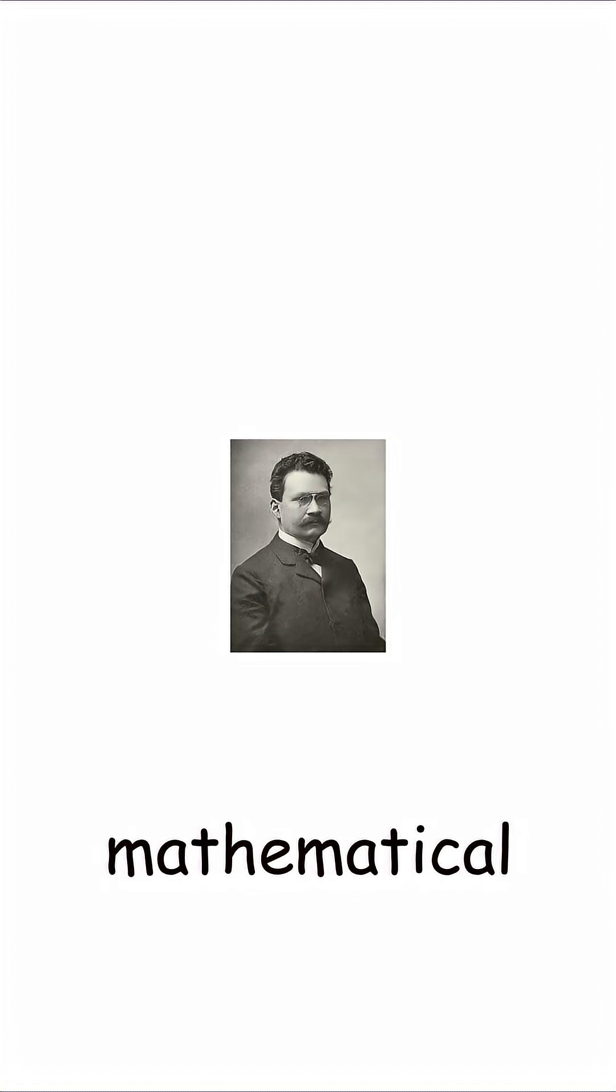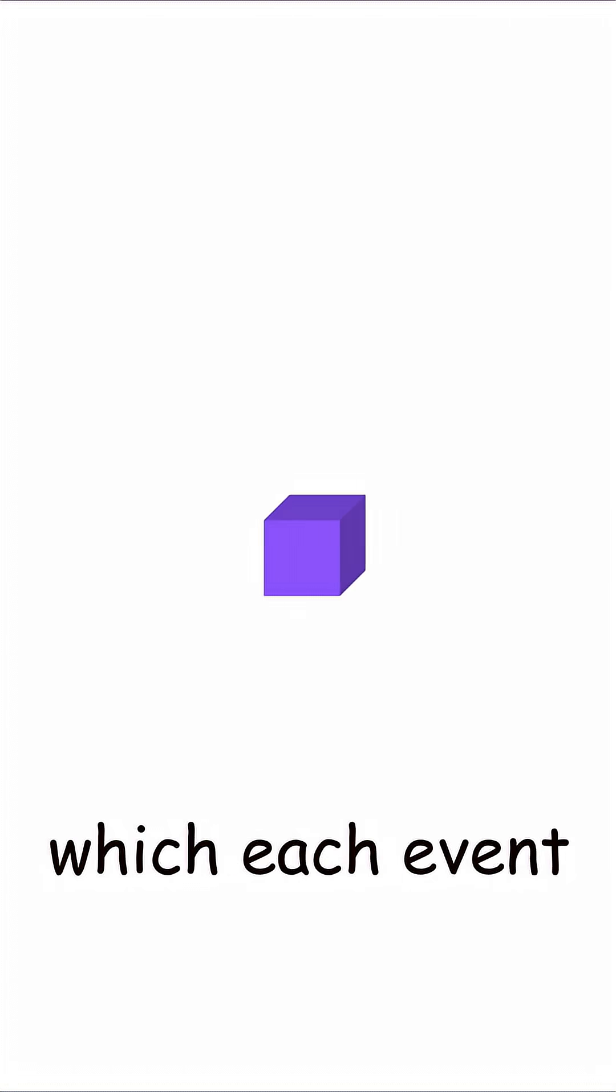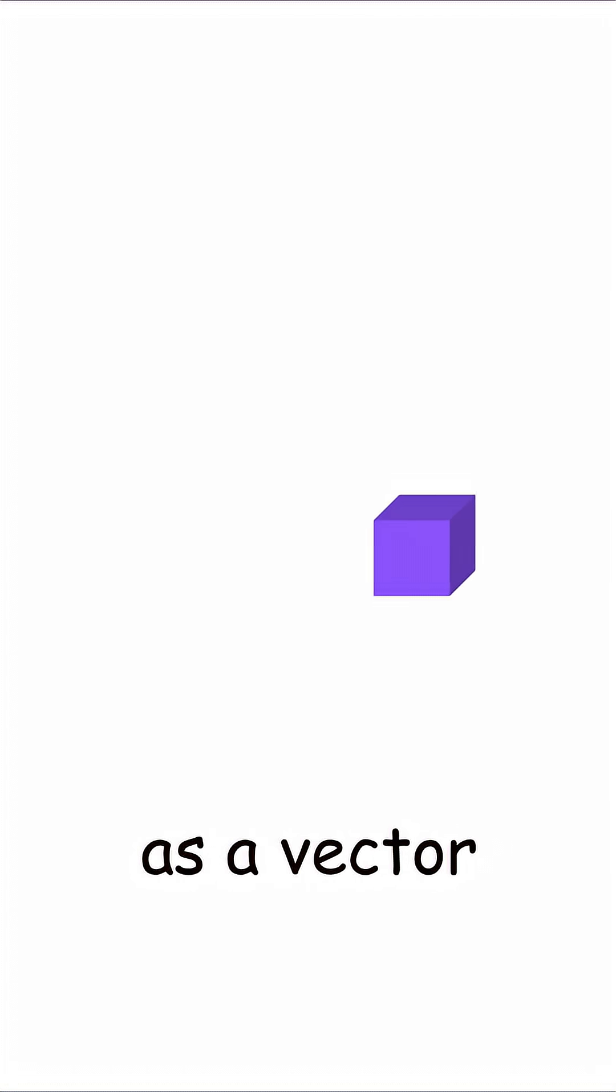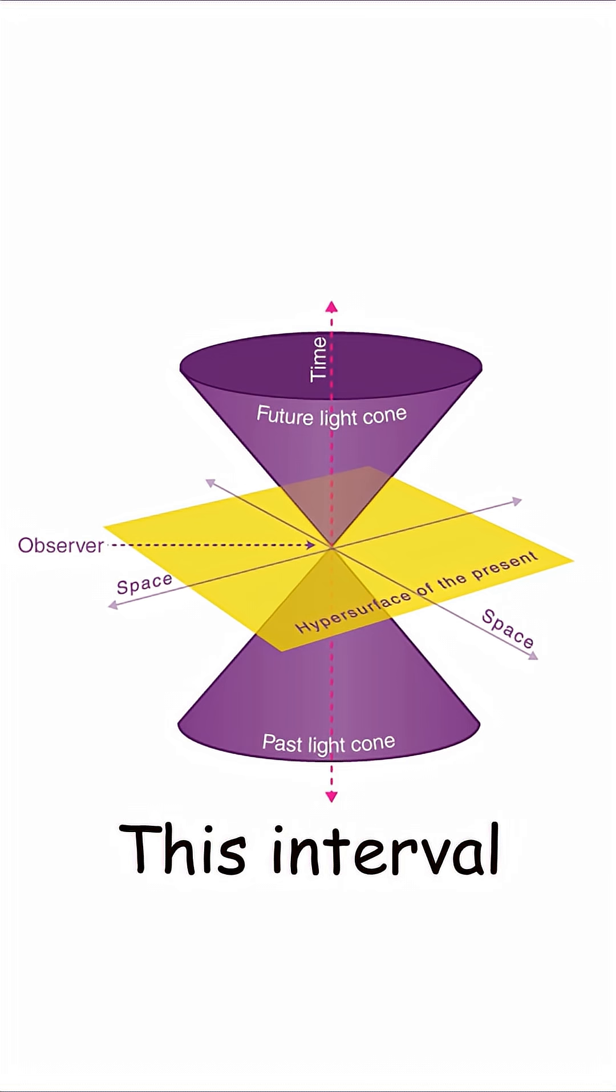Hermann Minkowski gave mathematical form to this idea through the concept of spacetime, a four-dimensional continuum in which each event is represented as a vector (x,y,z,ct), where ct indicates the temporal coordinate expressed in units of length by multiplying time by the speed of light. This interval can be represented graphically through the light cone.